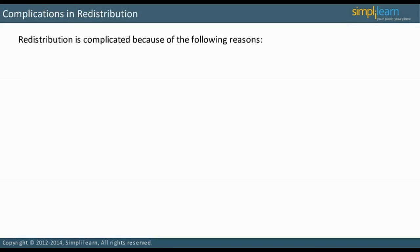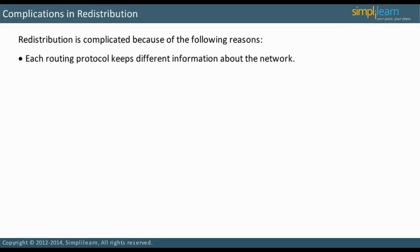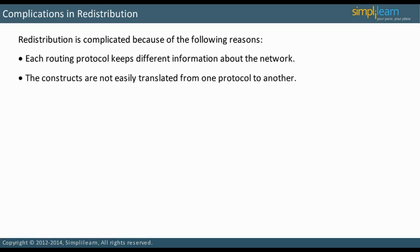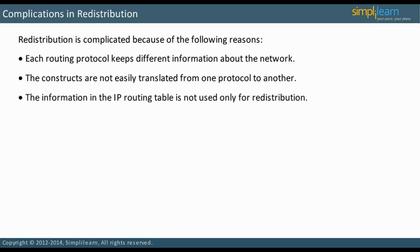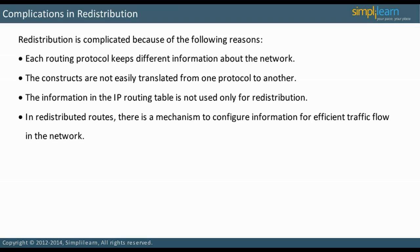Why is redistribution complicated? The major reason is that each routing protocol keeps different information about the network. For example, EIGRP maintains information about reported distance, but OSPF does not. Such constructs are not easily translated from one protocol to another. Information in the IP routing table alone is not used for redistribution. For efficient traffic flow, there is a mechanism to configure information for the redistributed routes, but there are some caveats in practice.